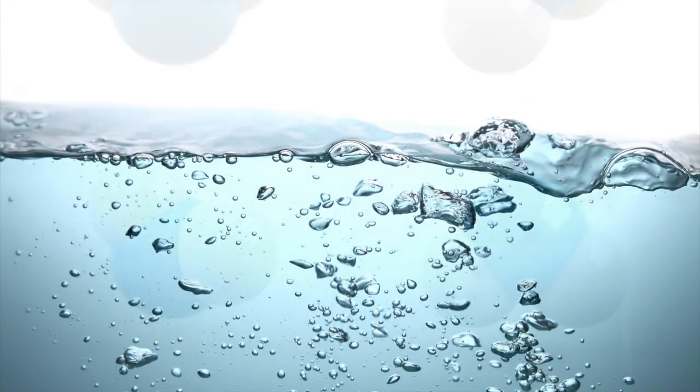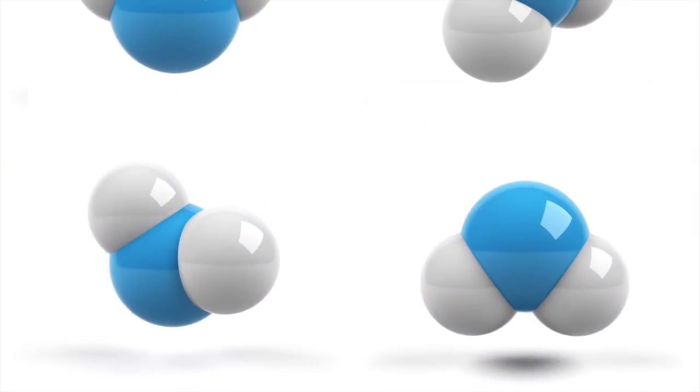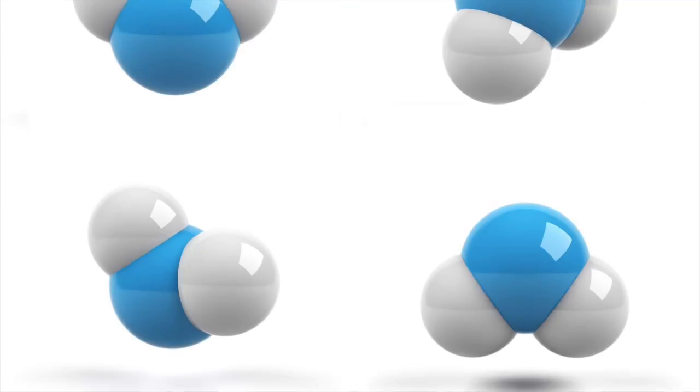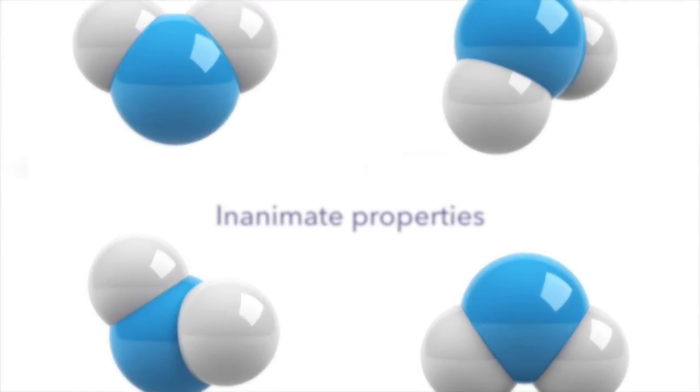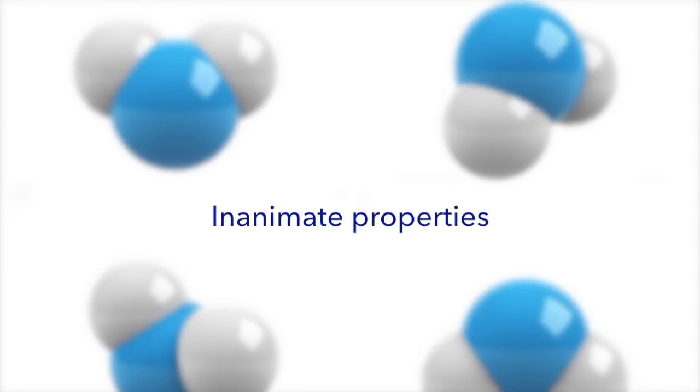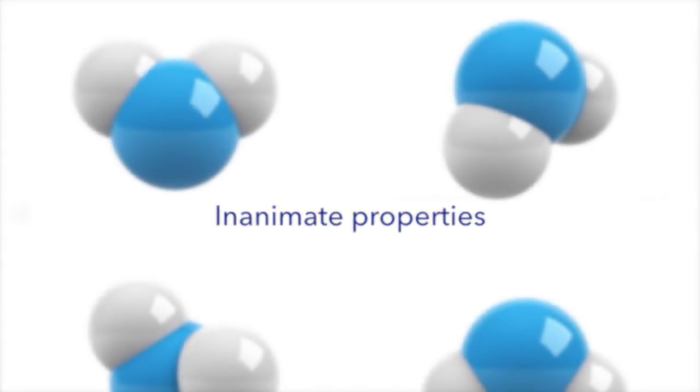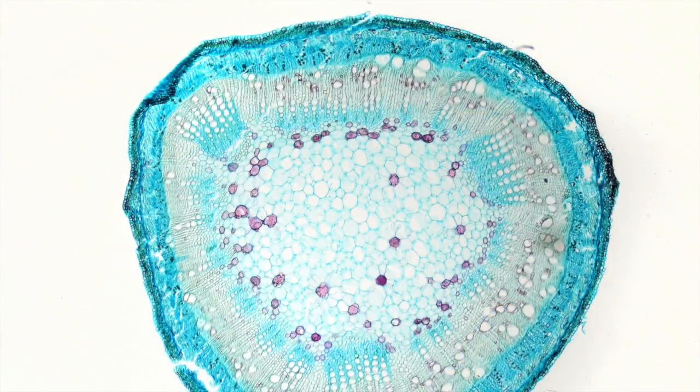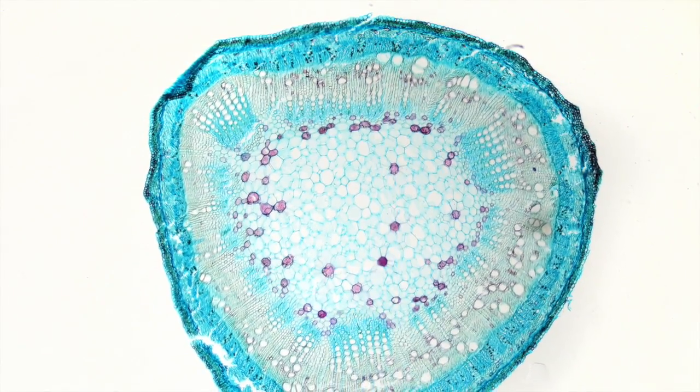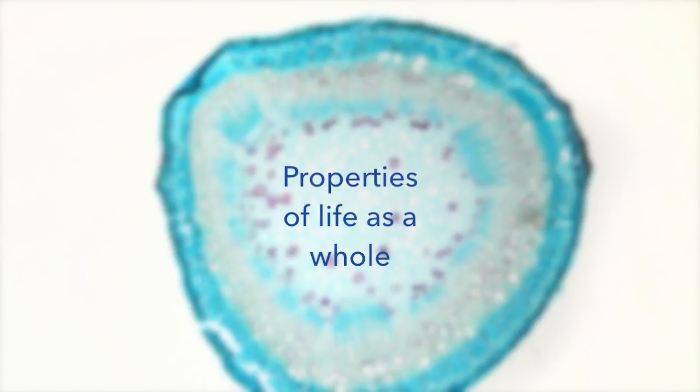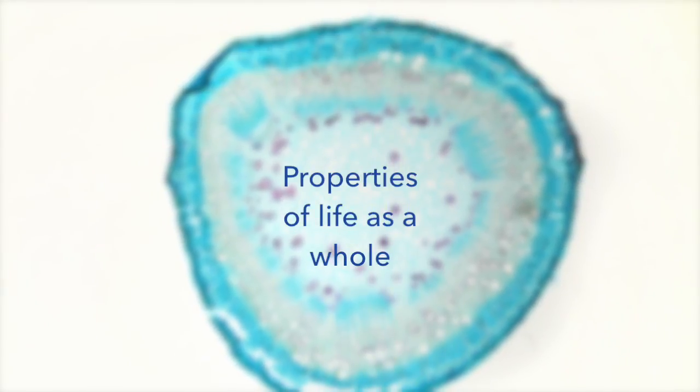Another often cited example of emergence is the phenomena of life. Biological systems, such as a plant cell, consist of a set of inanimate molecules, none of which in isolation have the property of life, but it is the particular way that these elements are arranged into structures and processes that enable the emergent phenomena of the living system as an entirety.